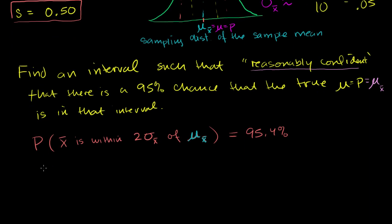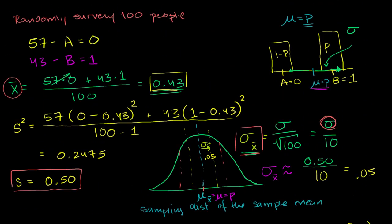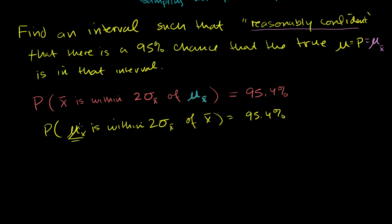This statement is exactly the same as saying: the probability that the mean of the sampling distribution is within two standard deviations of the sample mean x is also 95.4%. These are the exact same statement — if x is within two standard deviations of the mean, then the mean is within two standard deviations of x. Since the mean of the sampling distribution equals the population mean p, the proportion of the population that is a 1, we can substitute p in.